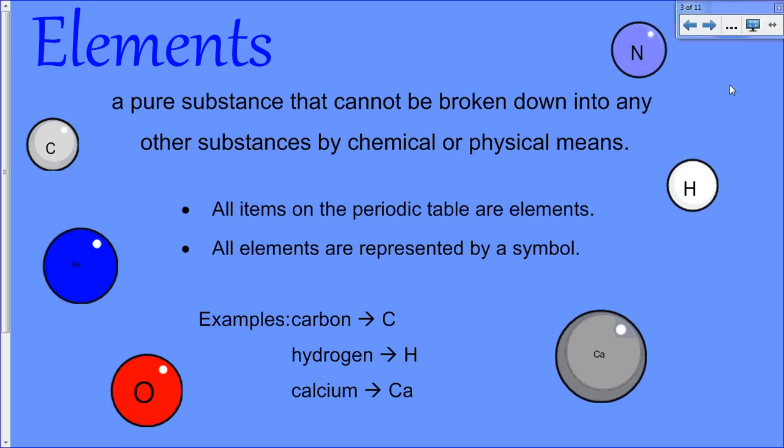An element is a pure substance that cannot be broken down into any other substance. All the elements can be found on the periodic table, and elements are represented by a symbol. For example, carbon is represented by a capital C, hydrogen is represented by a capital H, and calcium is represented by a capital C and a lowercase a.